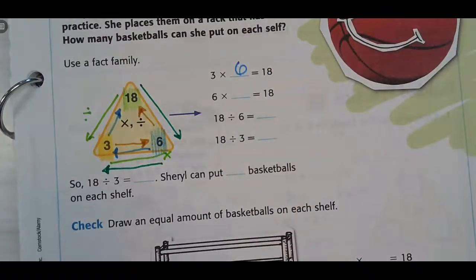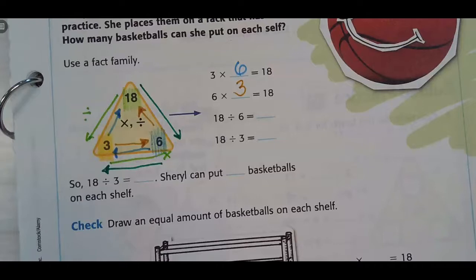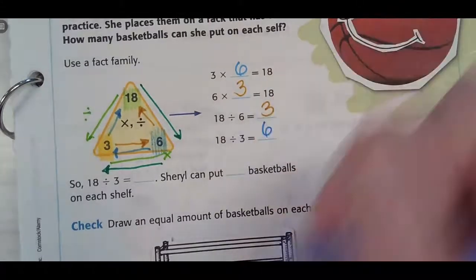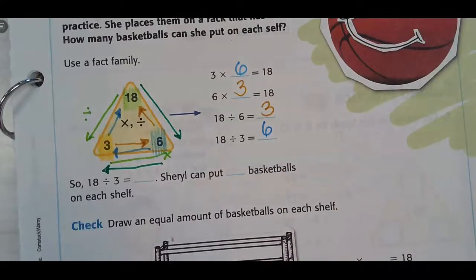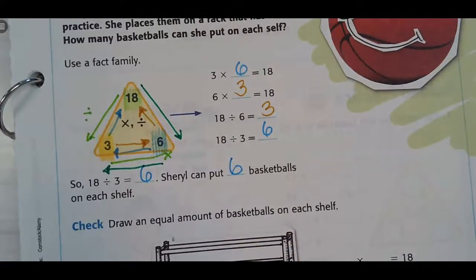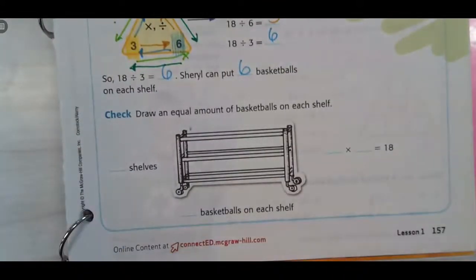6 times what is 18? 3. I said it the wrong way, apparently. 18 divided by 3 is 6. Cheryl can put 6 basketballs on each shelf. Then it says, draw an equal amount of basketballs on each shelf. So, we're drawing 6 basketballs.